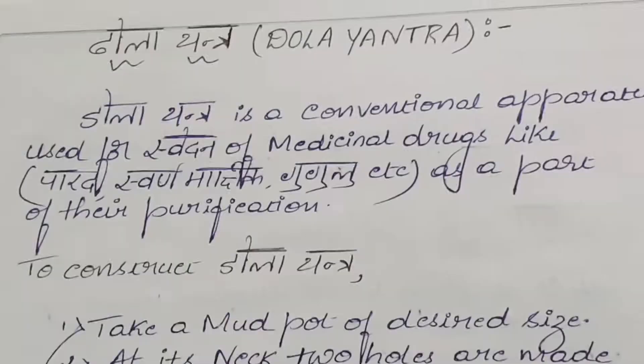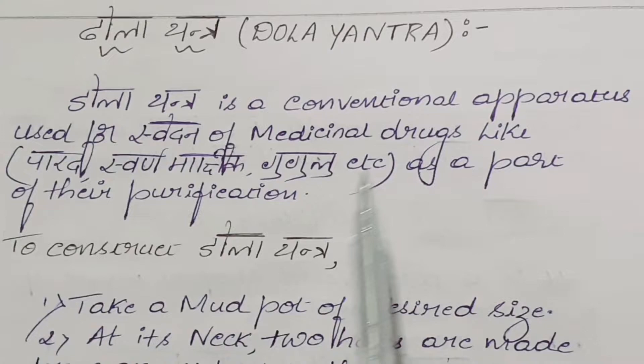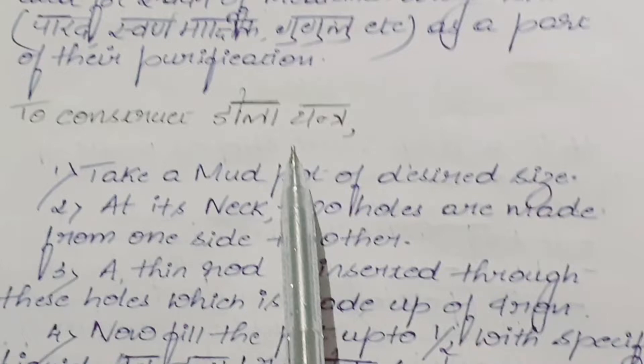According to dravya quantity by yukti, we select Ulukala Yantra. Thank you. Dola Yantra is a conventional apparatus used for Swedana of the medicinal drugs like Paratha, Swarna, Markshika, Guggula, etc., as a part of the purification process.